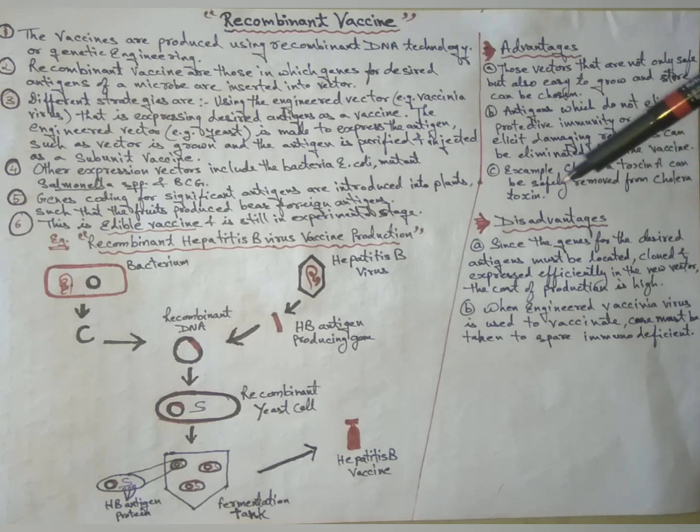Next, disadvantages. Since the genes for the desired antigens must be located, cloned, and expressed efficiently in the new vector, the cost of production is high.